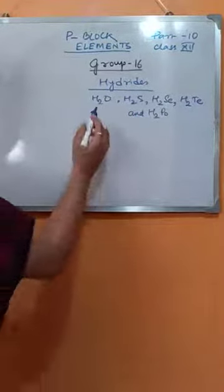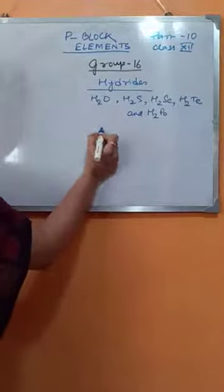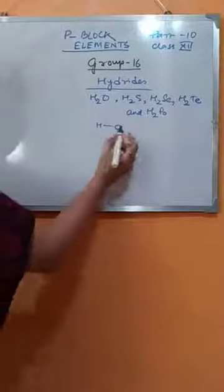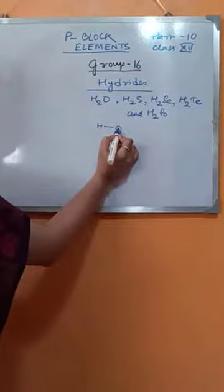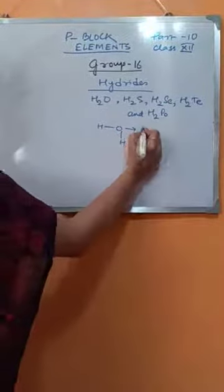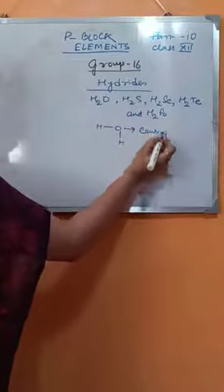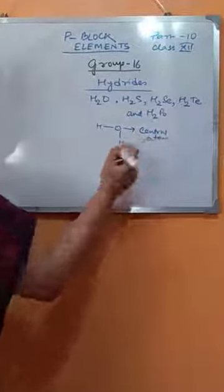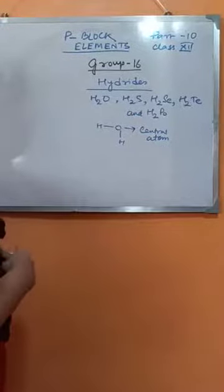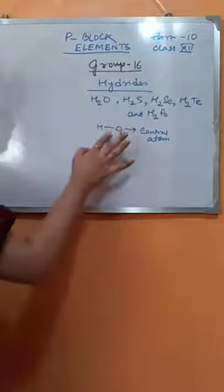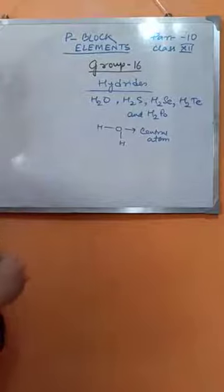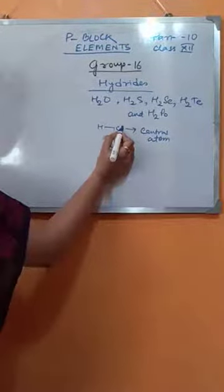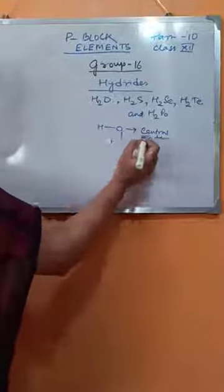That is, the bond between hydrogen and the central atom — Group 16 elements here are known as central atoms, not metals. Group 16 elements are all non-metals.